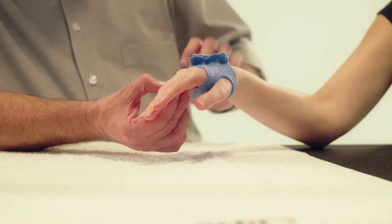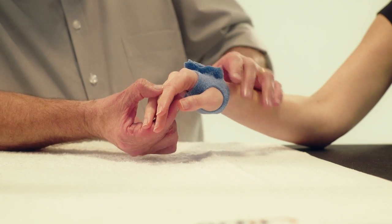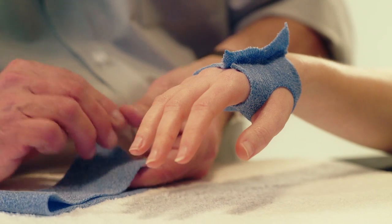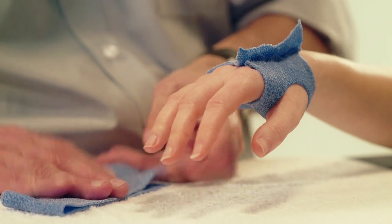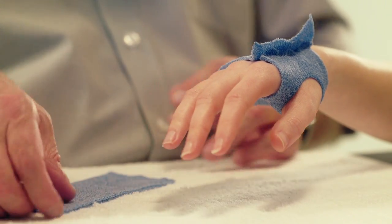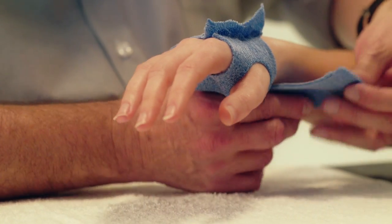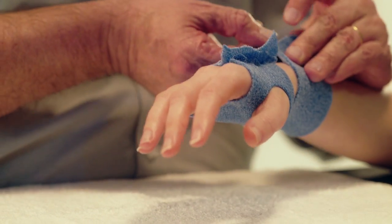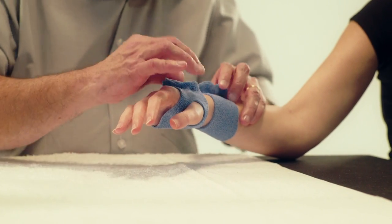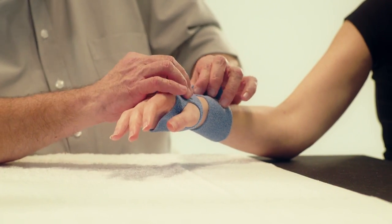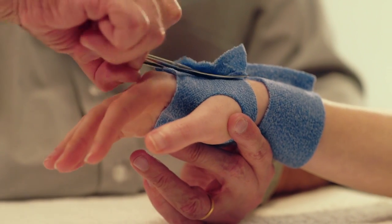Carefully mold the hand arches with a pressure point underneath the head of the third MCP. Take the second strip of Orphicast, fold it in half and wrap it around the distal part of the forearm. Pinch it together on the dorsal surface of the forearm.